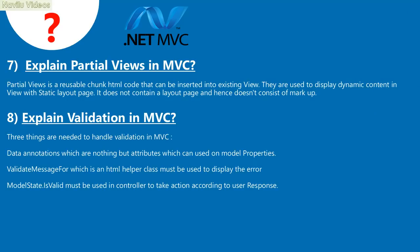Question 7: Explain partial views in MVC. A partial view is a reusable chunk of HTML code that can be inserted into an existing view. They are used to display dynamic content in a view with a static layout page. It does not contain a layout page and hence doesn't consist of markup.